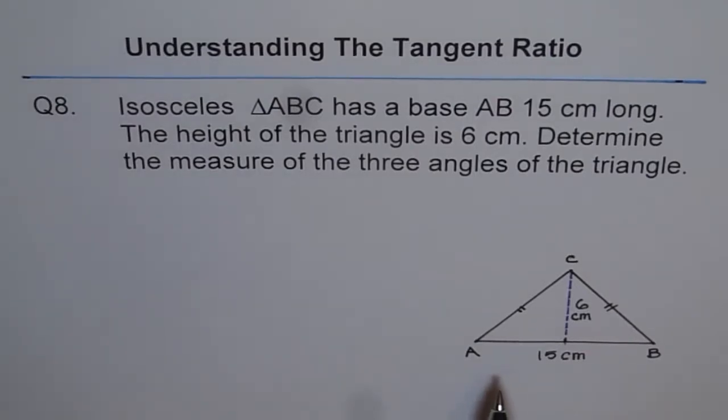The figure is given to us. This is a base AB 15 cm long. It is an isosceles triangle and therefore side AC is equal to side CB. 6 cm is the height of the given triangle.